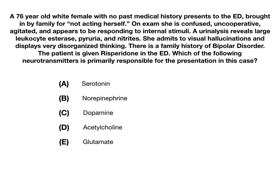Let's get into our practice question. We've got a 76-year-old white female with no past medical history coming into the emergency department, brought in by family for 'not acting herself.' On exam, she's confused, uncooperative, agitated, and appears to be responding to internal stimuli. A urinalysis reveals large leukocyte esterase, pyuria, and nitrites. She admits to visual hallucinations and displays very disorganized thinking. There is a family history of bipolar disorder. The patient is given risperidone in the ED. Which of the following neurotransmitters is primarily responsible for the presentation seen in this case?